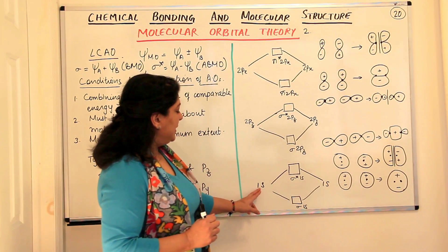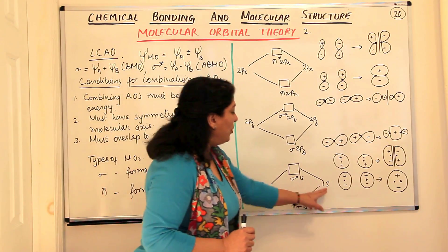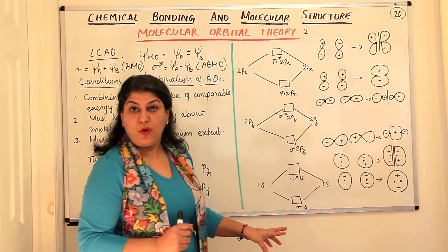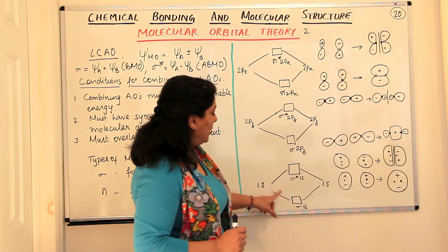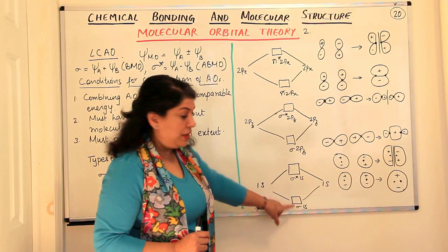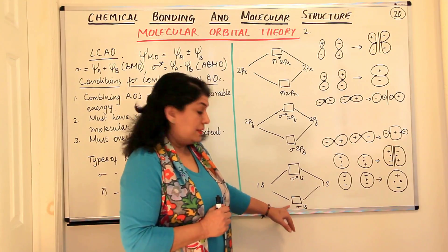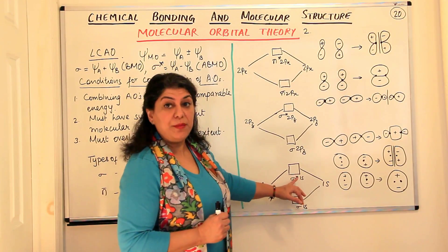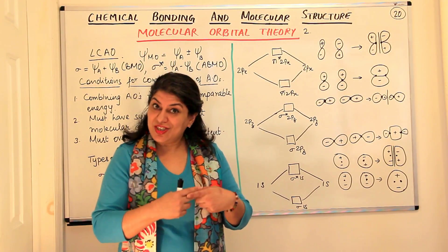When you have 1s and 1s orbitals with one electron each overlapping, they result in the formation of two molecular orbitals. One is the sigma 1s—the bonding sigma molecular orbital—and the other is sigma-star 1s, which is anti-bonding. These atomic orbitals combine to form molecular orbitals.